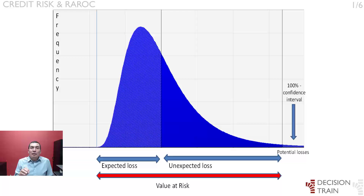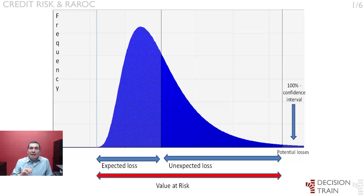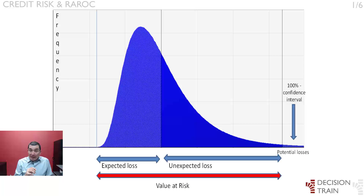If capital is set according to the gap between EL (expected losses) and value at risk, and if EL is covered by provisions or revenues, then the likelihood that the bank will remain solvent over a one-year horizon is equal to the confidence level. Under Basel II, capital is said to maintain a supervisory fixed confidence level.